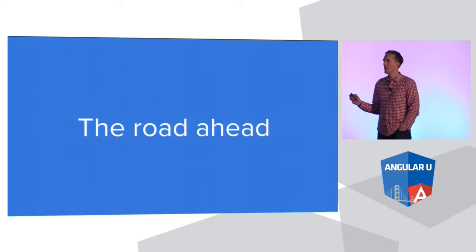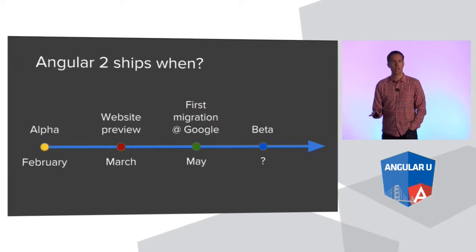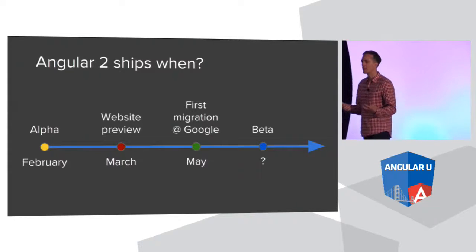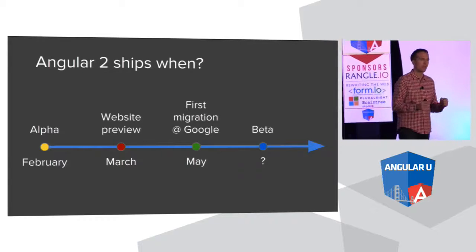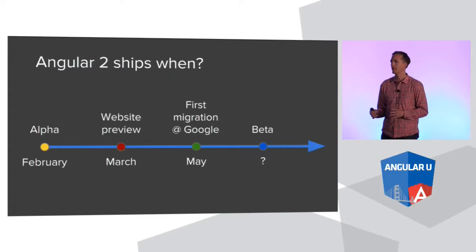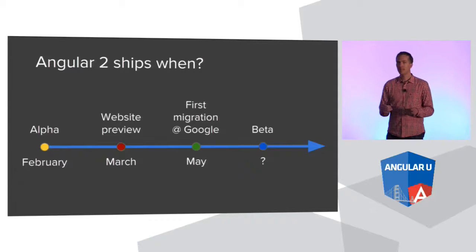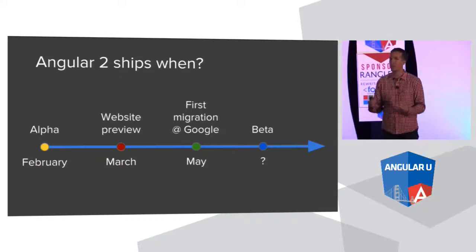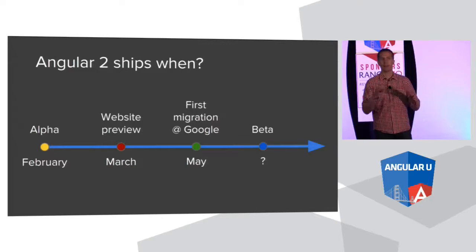A lot of people ask me when Angular 2 will be done, and I always say I don't know. But I wanted to give you a way to follow along with our progress. Back in February, we announced the alpha release of Angular 2 with initial bundles you could use. In March, we built a website preview at Angular.io with some documentation for APIs and a quick start guide. Since then, internally at Google we've started migrations of large apps — teams of about 100 folks — building on Angular 2 already, so we know it's ready when we get to beta and final release.